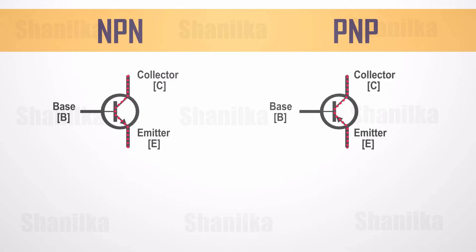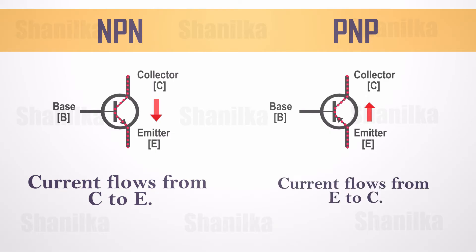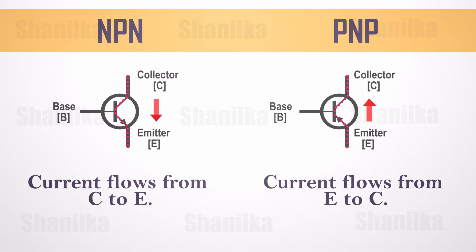In NPN transistors, the current flows from the collector terminal to the emitter terminal. In PNP transistors, the current flows from the emitter to the collector terminal.